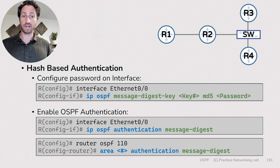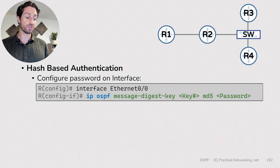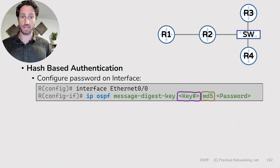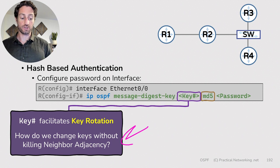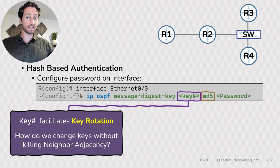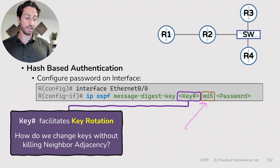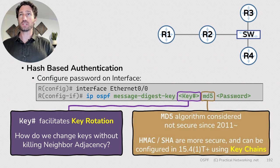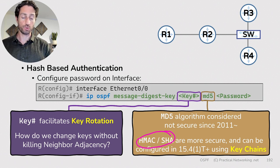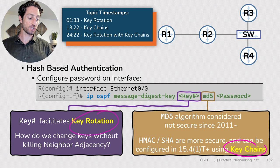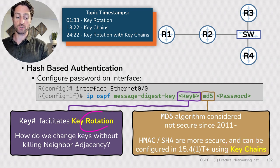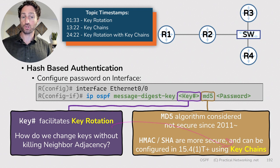In this lesson, we're going to focus on two items left from the prior lesson regarding the command to configure hash-based authentication. The first is the key ID, which facilitates key rotation — answering how we change keys on two routers with an active neighbor adjacency without risking bringing it down. The second item is MD5, which has been considered less than secure since 2011. A more secure option is HMAC-SHA, which requires a new construct known as a keychain. We'll cover key rotations, then keychains, then combine the two.